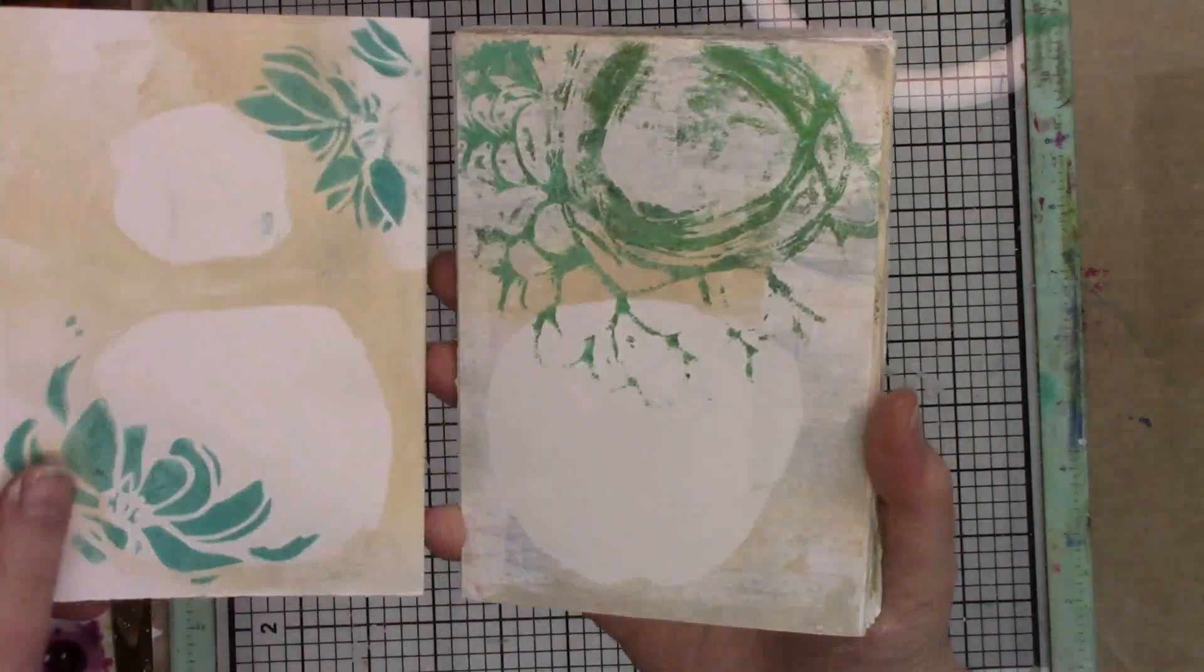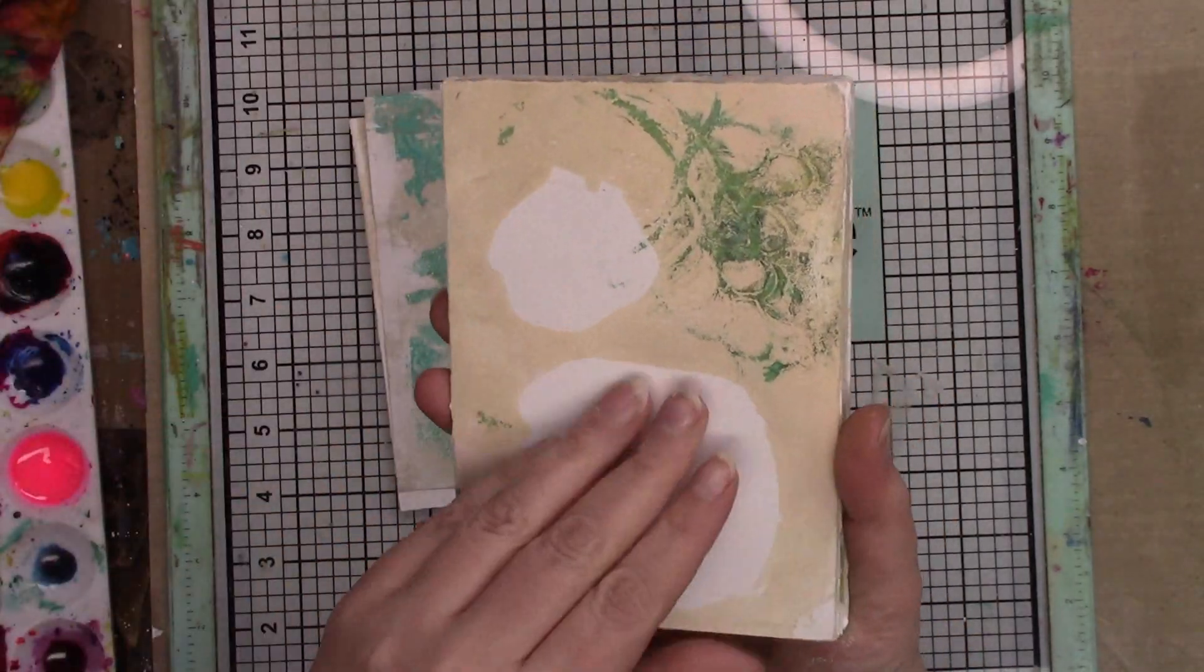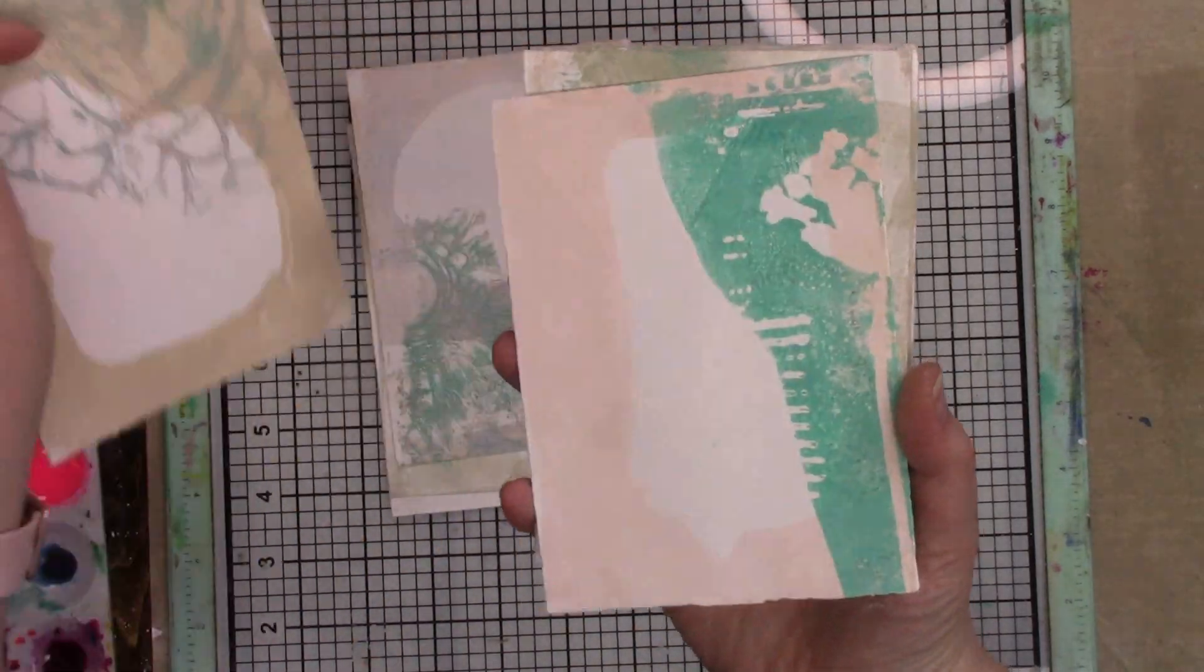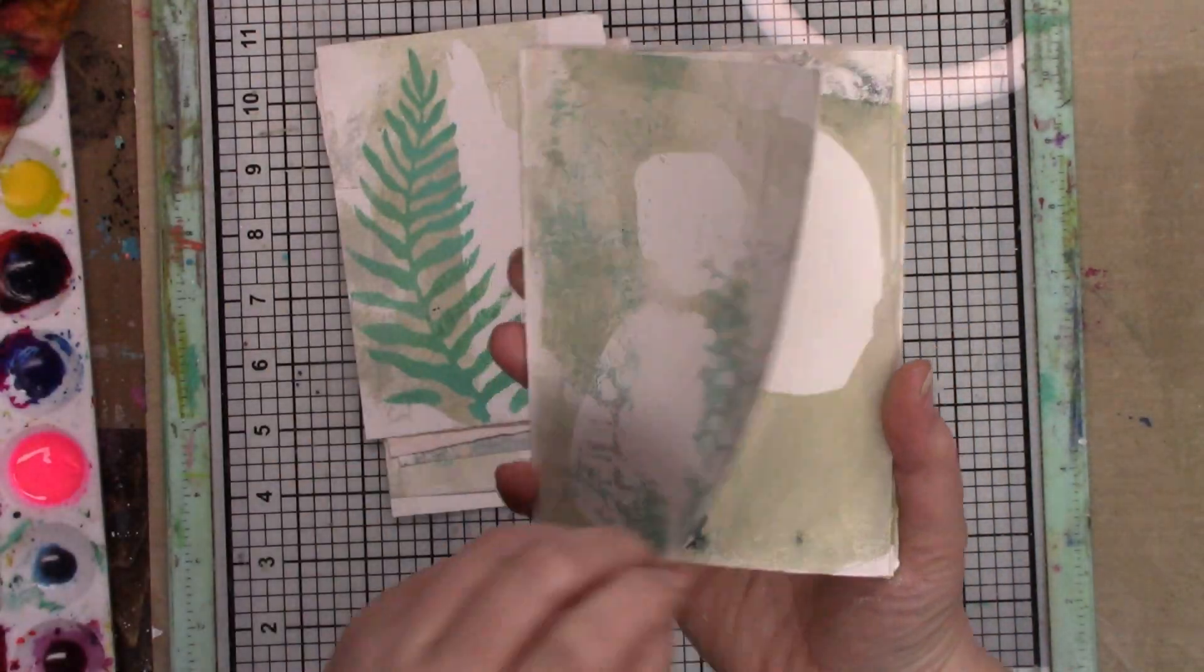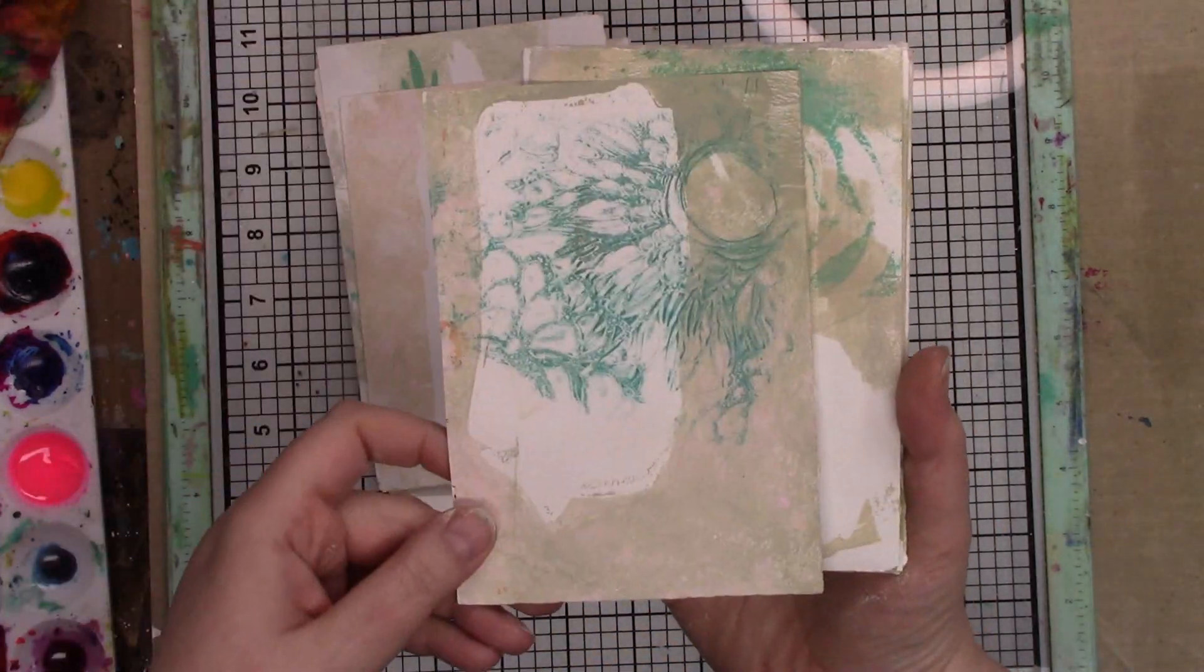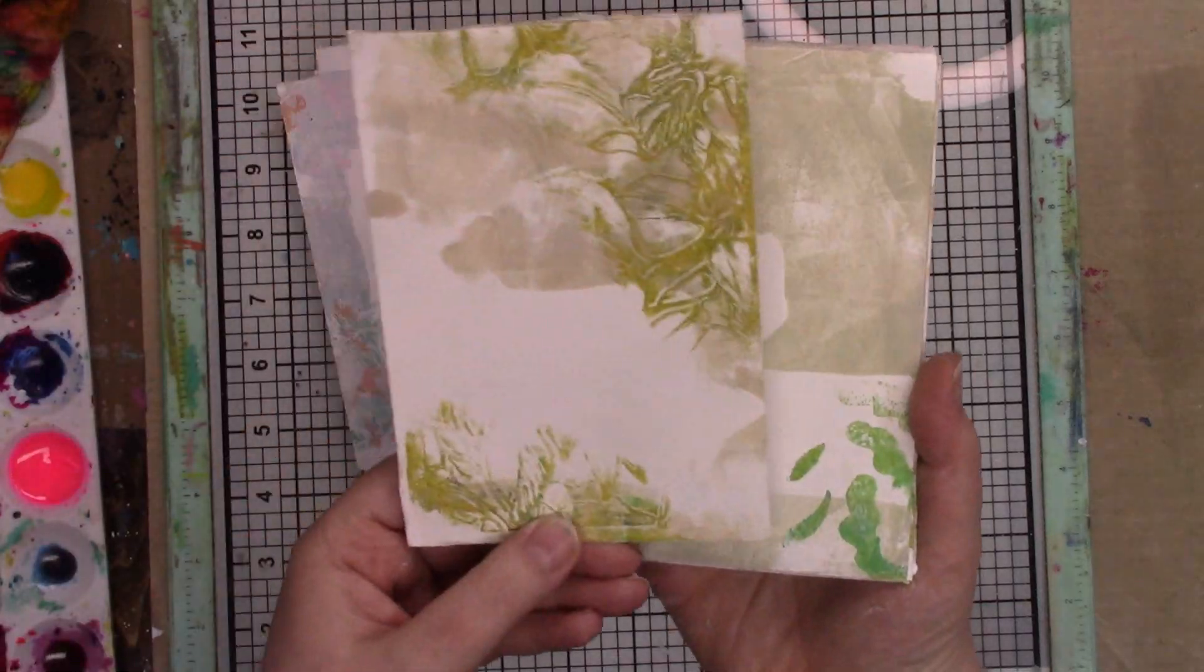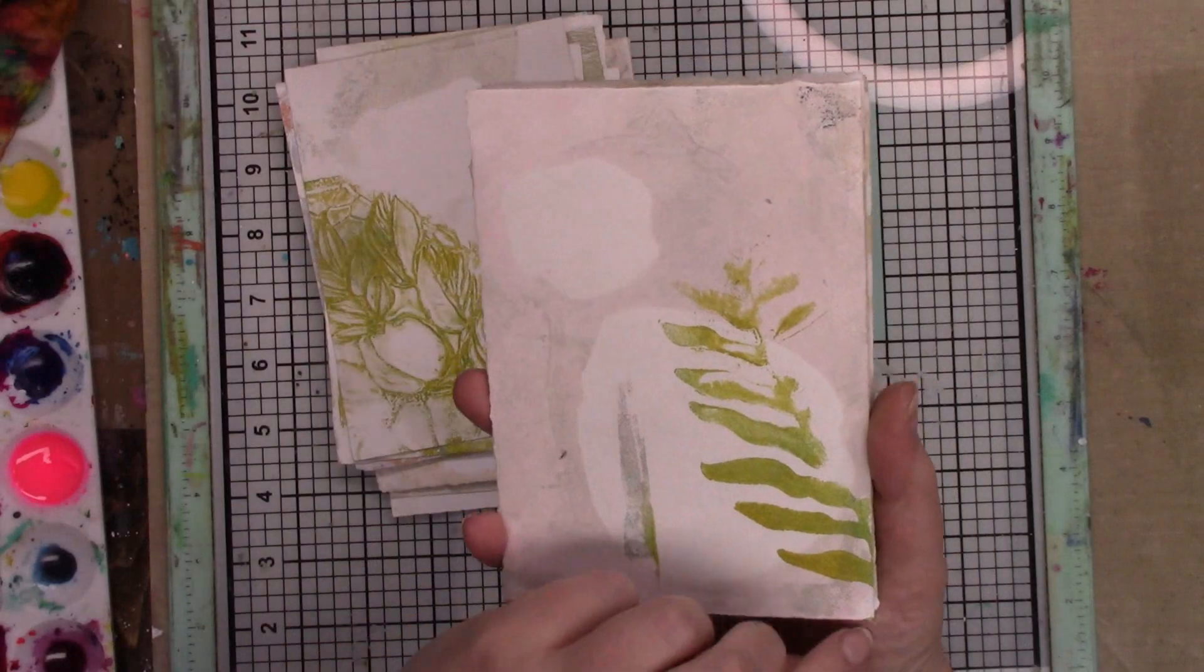Hi everybody, it's Denise back for part two of my printed project for this month. In part one we created some very simple background pages using light colors in the Dina Wakely Media paint and then going in with a second layer using some darker tones and some stencils.